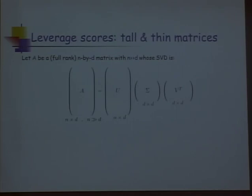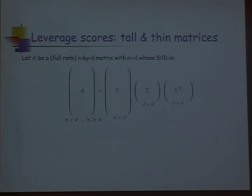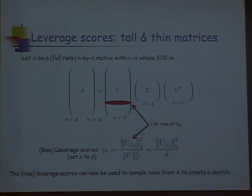Let's see a few examples. One is the case of a tall and thin matrix: N by D, with N considerably larger than D — think N is at least D log D. Assuming full rank, the SVD is U Σ V^T. U is the matrix of left singular vectors (all of them). In this particular case, the parameter K will be D, so there's no free parameter K. The row leverage scores are the Euclidean norms squared of the rows of U. You sample with respect to these row leverage scores to create a sketch of A — exactly what we do in over-constrained least squares.